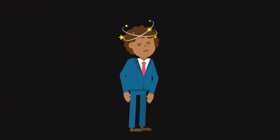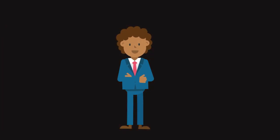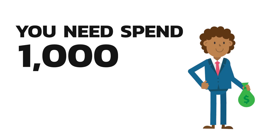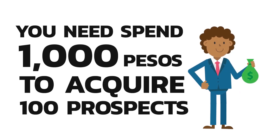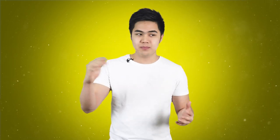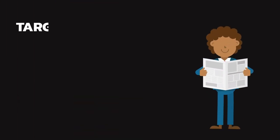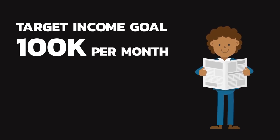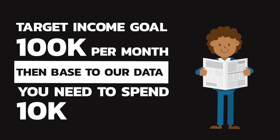For those who hate math, you may not like this, but if you are a business owner, you definitely need to know these numbers. Let's say the industry average says you need to spend 10 pesos in advertising to acquire one prospect — meaning 1,000 pesos to acquire 100 prospects. If you're selling a product that costs 5,000 pesos, a 2% conversion rate means 2 out of 100 will buy, so you'll earn 10,000 pesos for every 1,000 pesos in ad spend. If your target income goal is 100,000 pesos per month, you will need to spend 10,000 pesos in advertising. This data helps you estimate the work needed and the cost to achieve your target.